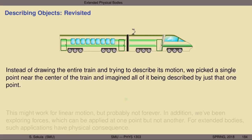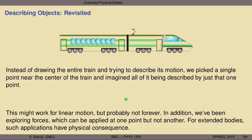Instead of drawing the entire train and trying to describe its motion, we pick a single point — near the center of the train — and imagine that all of it is described by that one point. We reduced something large and complicated, like this light rail train, to something simple, like a green dot with mass M set to that of the whole train. This might work well for linear motion, even motion in two or three dimensions, with a limited range of forces that don't tear the object apart or cause it to rotate wildly. But obviously that's not going to work in every situation.